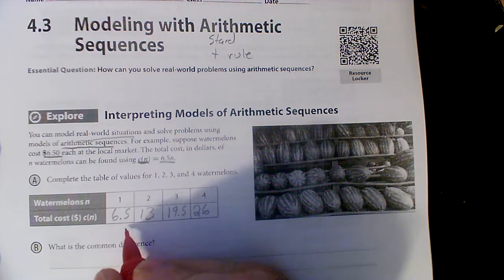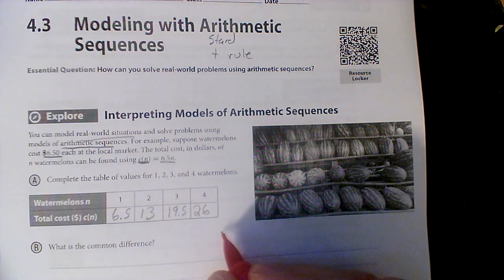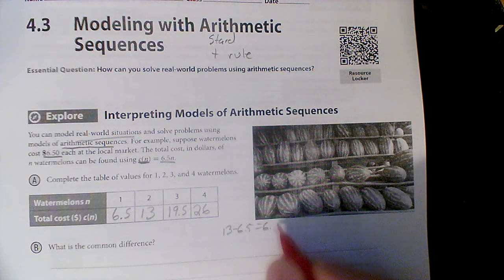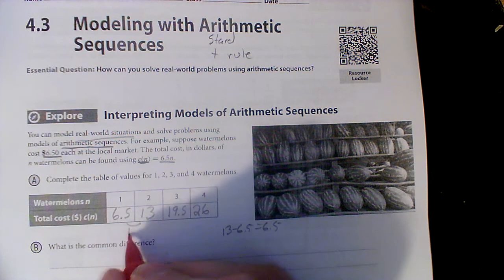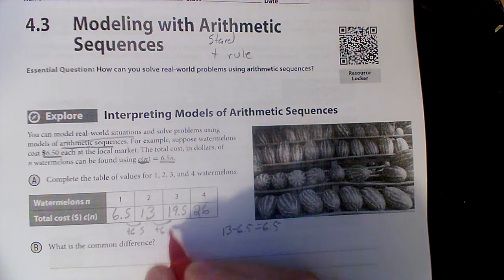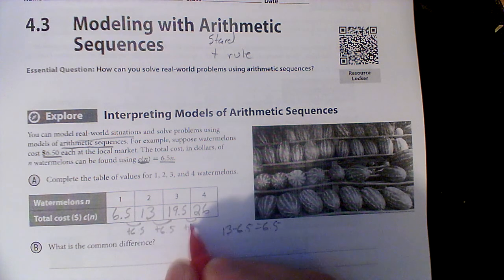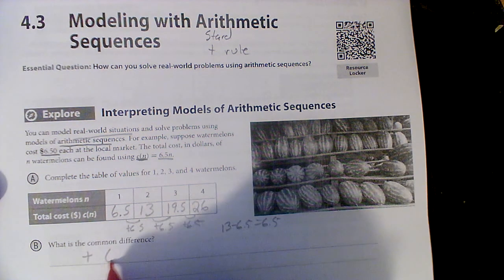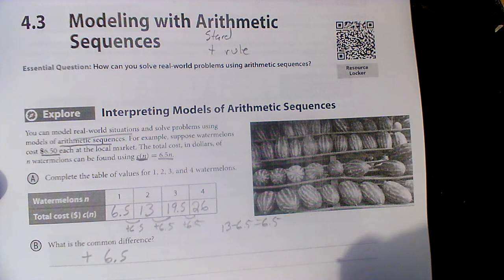So, common difference we already know, right? I could say thirteen minus six fifty, but we already know it's six fifty because they told us how much each. So this would be plus six fifty all the way down, plus six fifty, and I can do this last one, plus six fifty, for a common difference of positive six dollars and fifty cents.